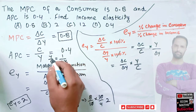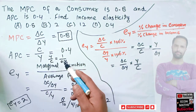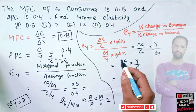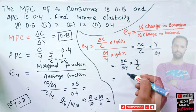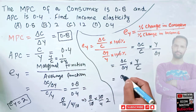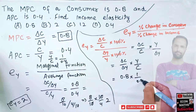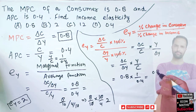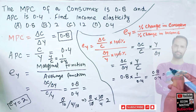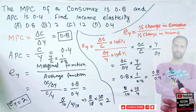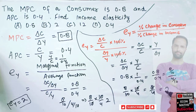So we write del C upon del Y as 0.8, multiplied by Y upon C which is 1 upon 0.4, giving us 0.8 upon 0.4. That is 8/10 divided by 4/10, which equals 8/10 multiplied by 10/4, and 10 cancels out, giving us 8 upon 4, which equals 2. So the income elasticity is again 2.